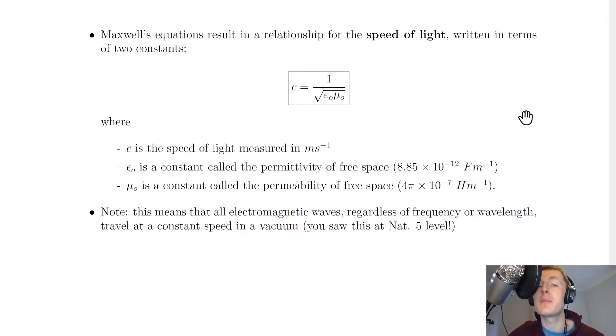Going back to the notes, Maxwell's equations result in a relationship for the speed of light c written in terms of two constants. This equation says c equals one over the square root of epsilon naught times mu naught, where c is the speed of light measured in meters per second.